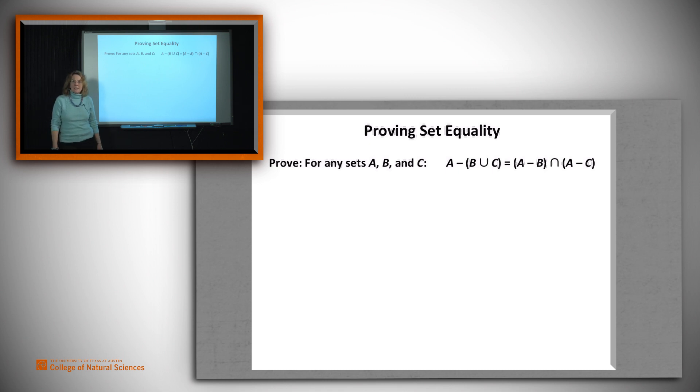We can think of this as a kind of distributivity property of minus over union. So how do we go about proving something like this? We know that two sets are equal just in case they contain the same element. So that's what we've got to prove.